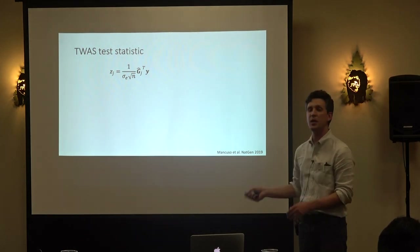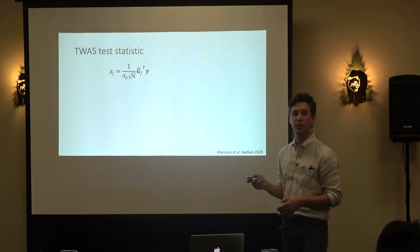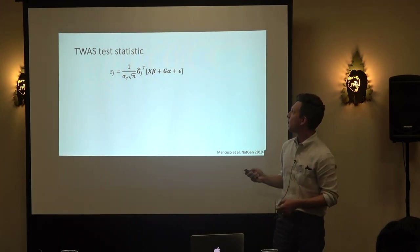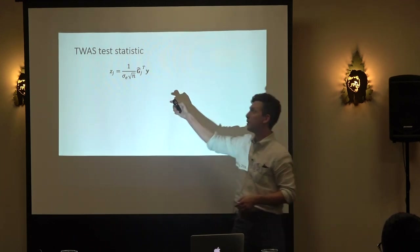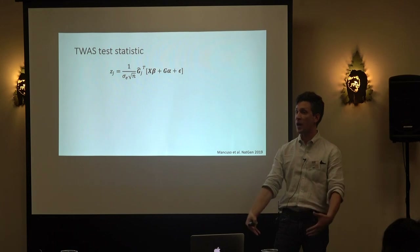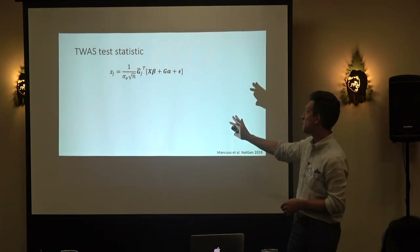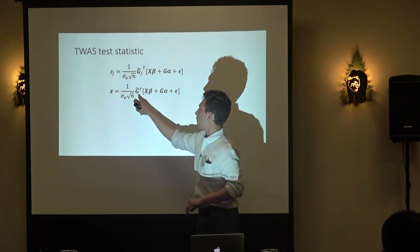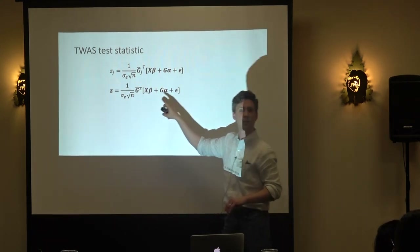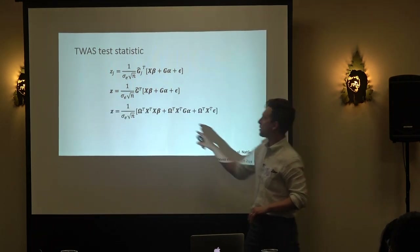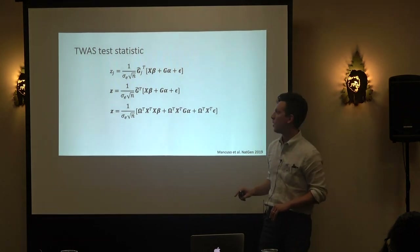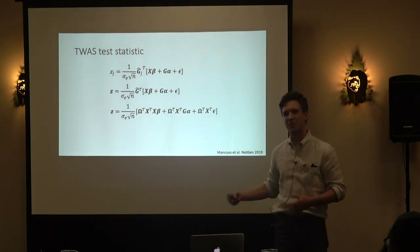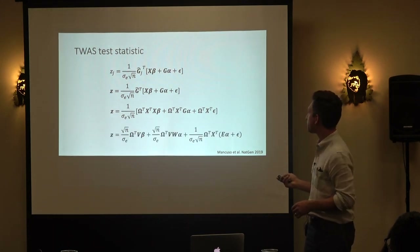Defining our test statistic as the projection of predicted expression onto Y, and replacing Y with the true model, we get this expansion. Reflecting that across all genes at a region by replacing with the matrix and pushing G into each term, we get a complex-looking expression. The Z-score is a bilinear form of our weights, the LD, and the residual effects — there's some tagging of residual effects — plus a bilinear form between our estimators, the true weights, and some noise terms.